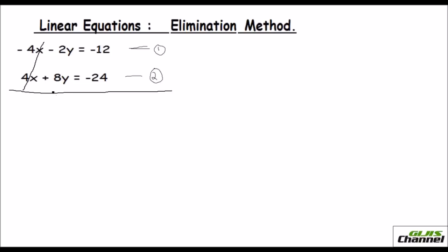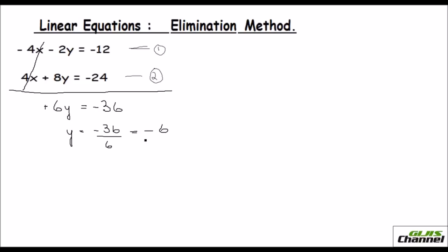After cancelling the x terms, we have minus 2y and plus 8y. When the signs are different, subtract them and use the sign of the greater number — that gives 6y. On the right-hand side, both signs are the same, so add them: that becomes negative 36. Dividing throughout by 6 gives y equals negative 6.